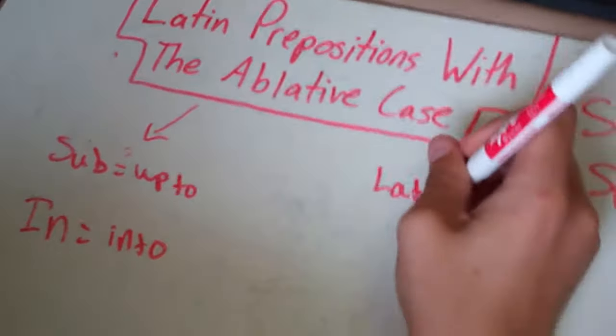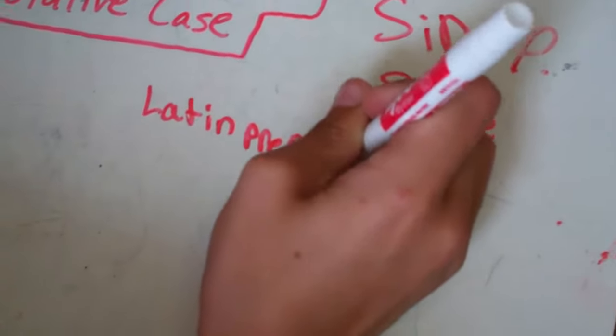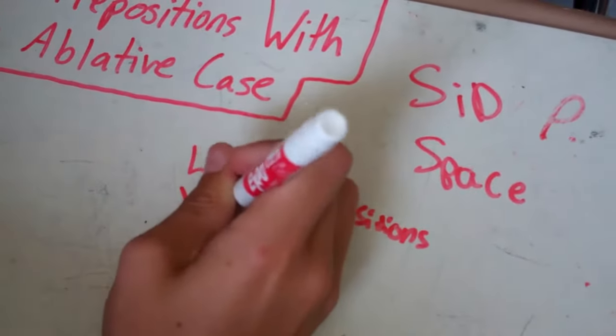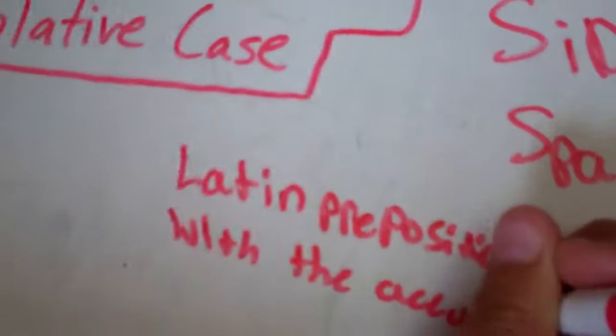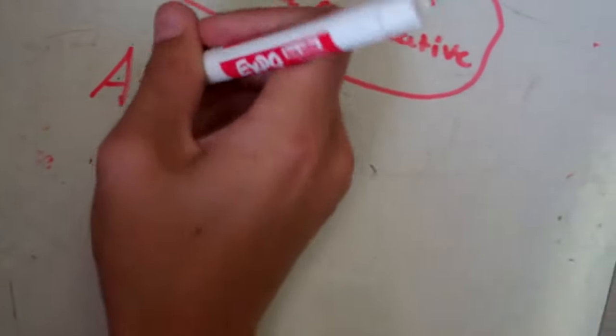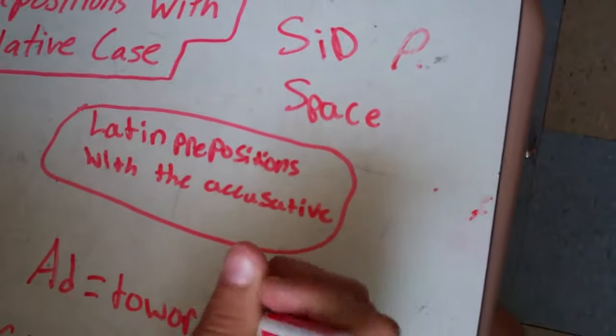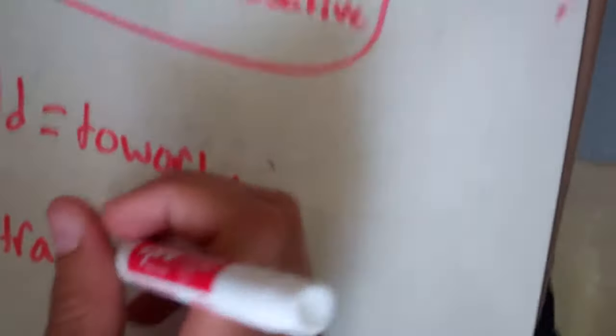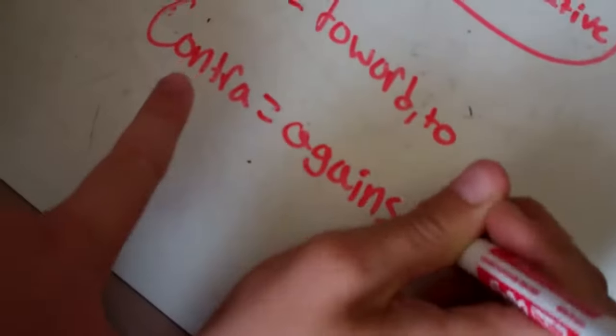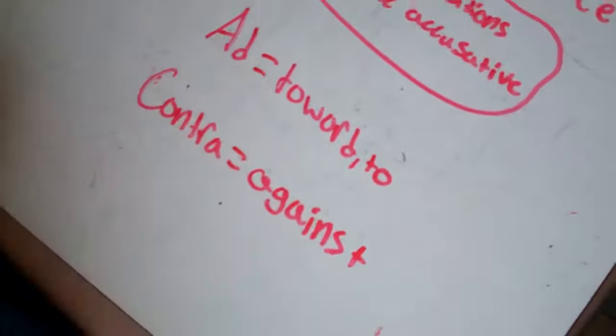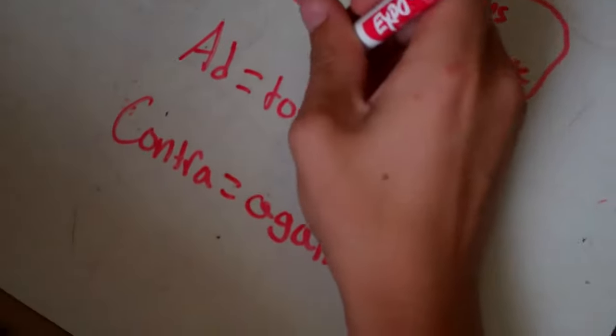There's also Latin prepositions with the accusative, and they are ad and contra. Ad means toward or to, and contra means against. And you can remember this by contraband or contradict.